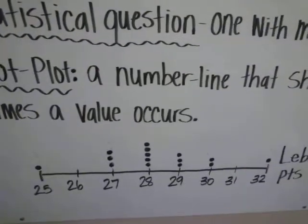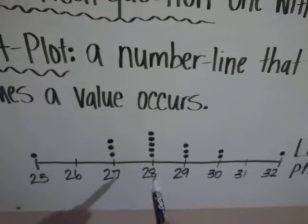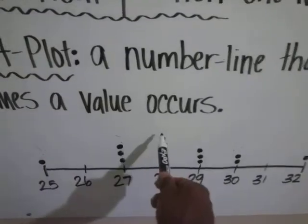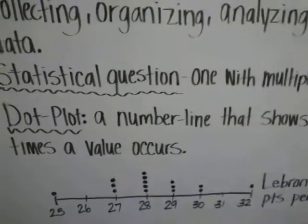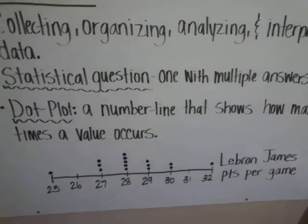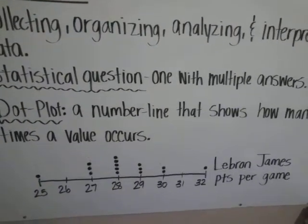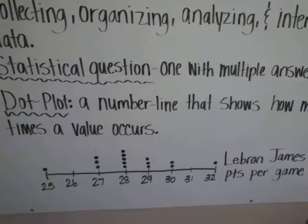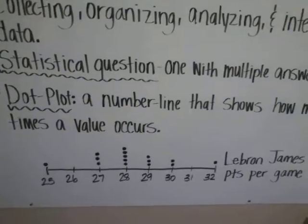Lastly, we're going to identify any peaks that the data may have. It can have multiple peaks, but in this case there's one peak in which 28 points repeats itself the most — that's where the data peaks. Now we can interpret the data: LeBron James, in the last 15 games, his points per game average around 28 points. That's our interpretation of the data collected.